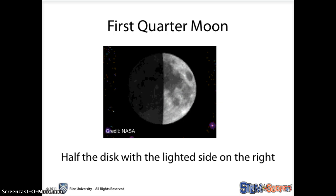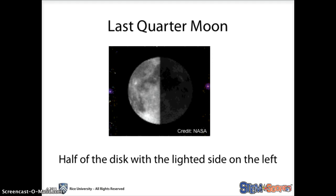The first quarter moon is when half the disk with the lighted side is on the right. The last quarter moon is when half the disk with the lighted side is on the left.